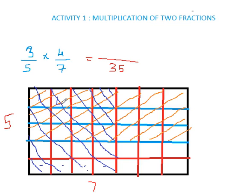Then total number of boxes shaded are 12 boxes out of 35. 12 boxes are shaded. Then the answer is 12 by 35. Yes, you are correct, the answer is 12 by 35.